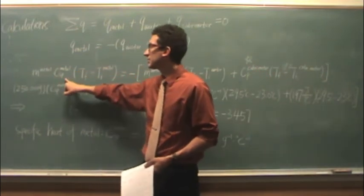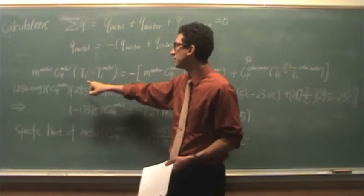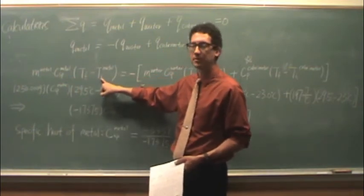that's the mass of the metal, times the CSP of that metal. Then there's t final minus the initial temperature of the metal.